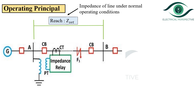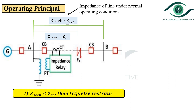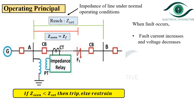Assume that a fault occurs at point F1. As this point is within the zone, this fault is called an internal fault. The relay will compute the impedance as seen from its location and compare it with the set value to take the trip decision. We know that if Z-seen is less than Z-set, the relay will trip; otherwise it will restrain. When the fault occurs, the fault current increases and the voltage decreases. Since Z-seen equals V by I, as current increases, Z-seen will decrease. As Z-seen is less than Z-set, the relay will trip. So for an internal fault, the relay will operate.